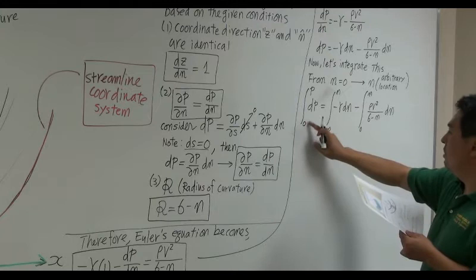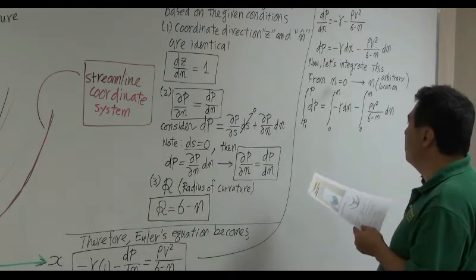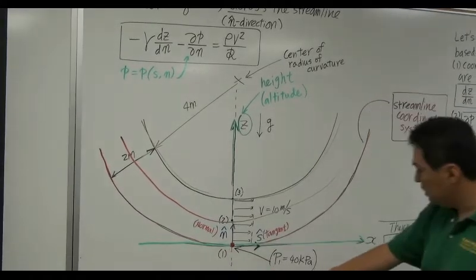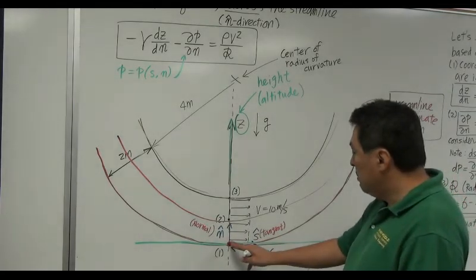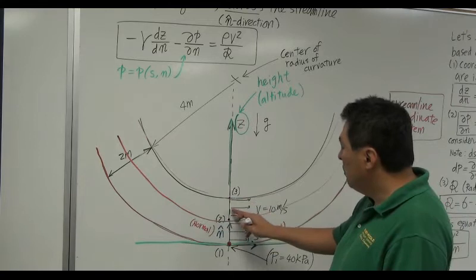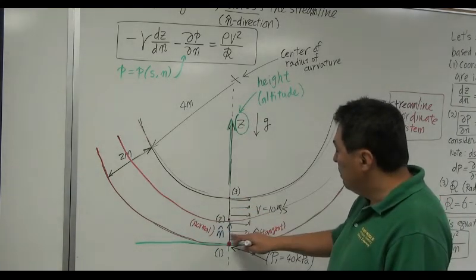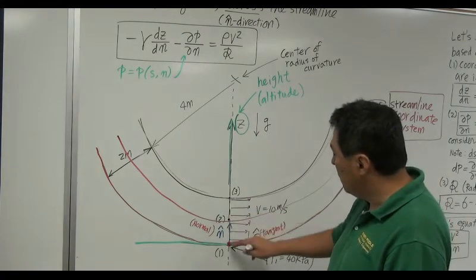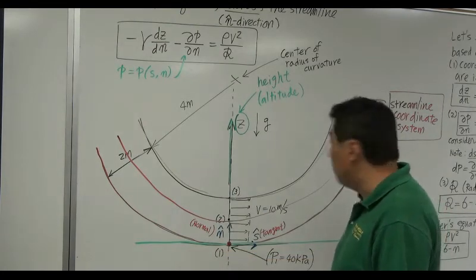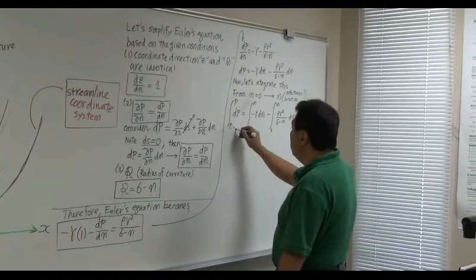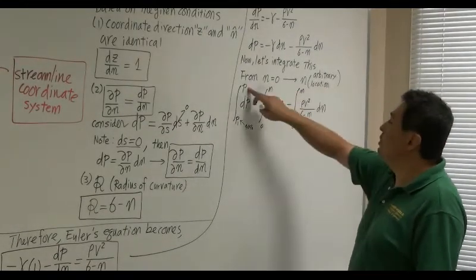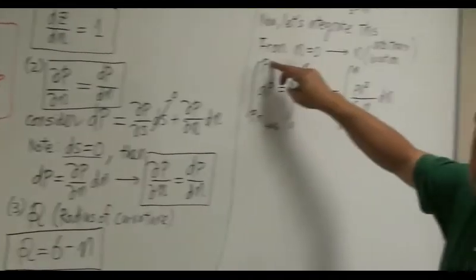At location n = 0, pressure is p₁. If n = 1 meter, it becomes p₂. If n = 2 meters, it gives p₃. So integrating, we get: p - p₁ = -γn - ρV²·∫₀ⁿ dn/(6 - n). Now let's evaluate ∫₀ⁿ dn/(6 - n): by integration this is a natural log, giving -ln(6 - n) + ln(6) = ln(6/(6 - n)).